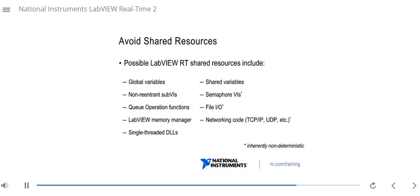The key is knowing which of these items are critical to your system, which ones can be moved to non-deterministic processes, and which ones are necessary for the operation of the system and cannot be avoided.